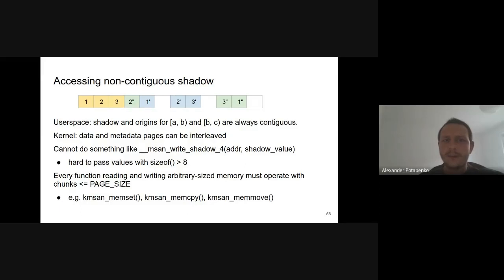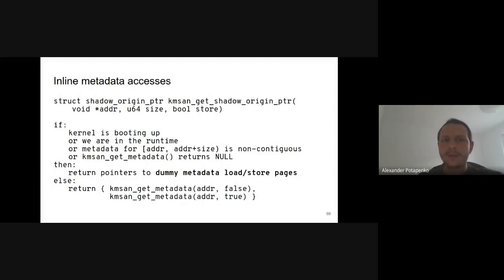All instrumentation functions that return struct shadow_origin_ptr end up calling kmsan_get_shadow_origin_ptr. Most of the time this function just returns what kmsan_get_metadata returns. But there are several cases — such as during kernel boot, recursive calls from the runtime, non-contiguous metadata, or when kmsan_get_metadata returns null — where the function instead returns pointers to special dummy metadata load and store pages. The dummy load page is zero-initialized so reading from it always results in initialized memory, and the dummy store page is only written to but never read, so all writes to it are effectively ignored.